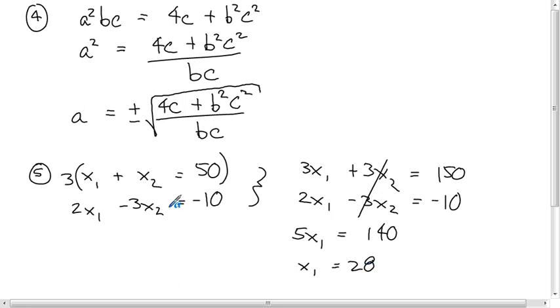And then you can plug 28 back in for x1 into either of these two equations and get the value of x2, 22. Another way, so that's probably the sort of quickest way to do it in this particular case. Sometimes that way of doing it can be sort of a nightmare, though, depending on what the equations look like.